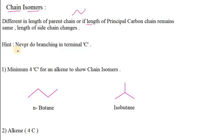Here is a hint: never do branching on a terminal carbon. This is a mistake — if you mistakenly do the branching on a terminal carbon, it is not actually branching; it is an extension of the principal carbon chain. So that you should not do.